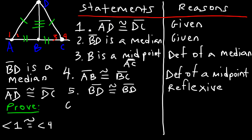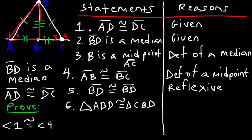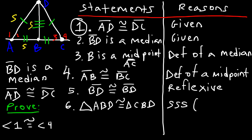Moving on to number six, we now have enough information to prove that the two triangles are congruent. We can now say that triangle ABD is congruent to triangle CBD. We can say that based on the side-side-side postulate, using statements one, four, and five.